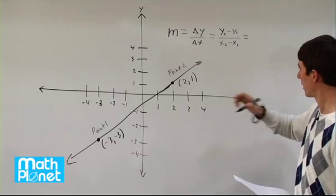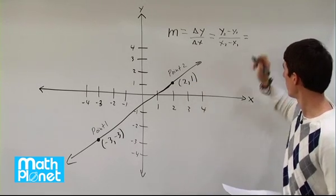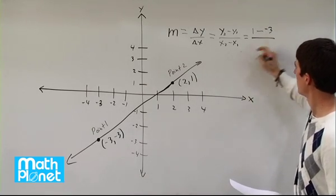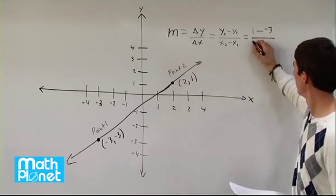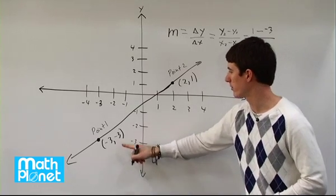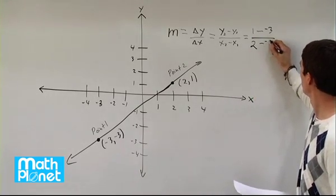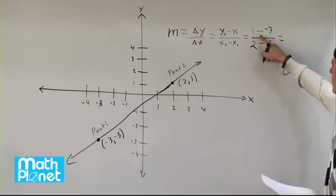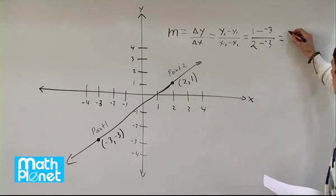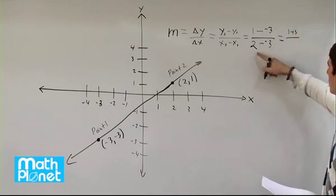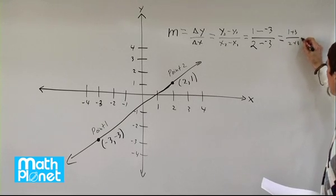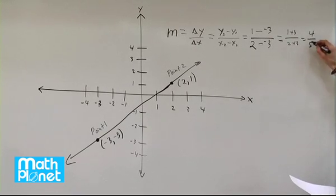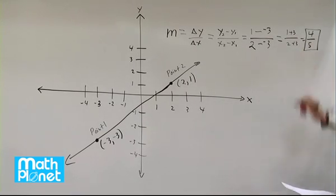So now we can just plug in our values. The second y is 1, minus the first y which is negative 3, over the second x which is 2, minus the first x which is negative 3. So 1 plus 3 equals 4 over 5, and that's our slope — m equals 4 fifths.